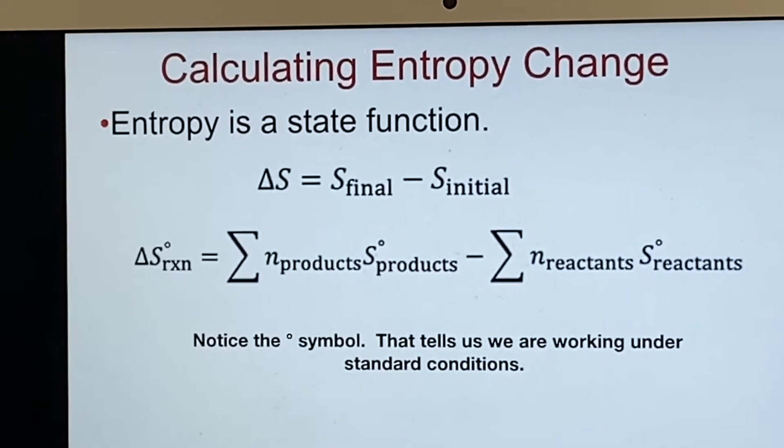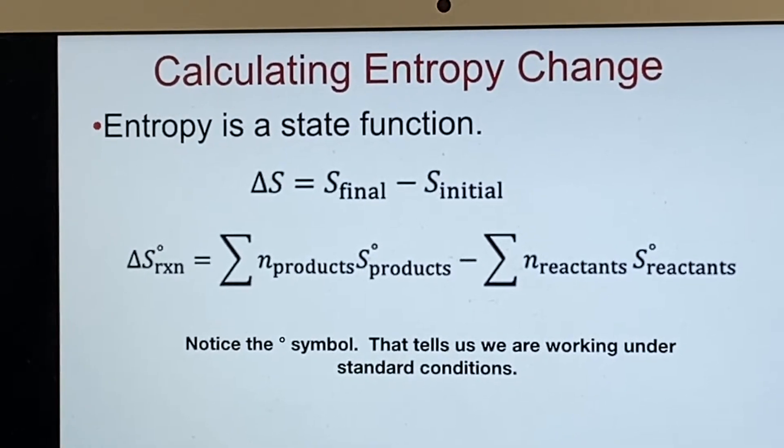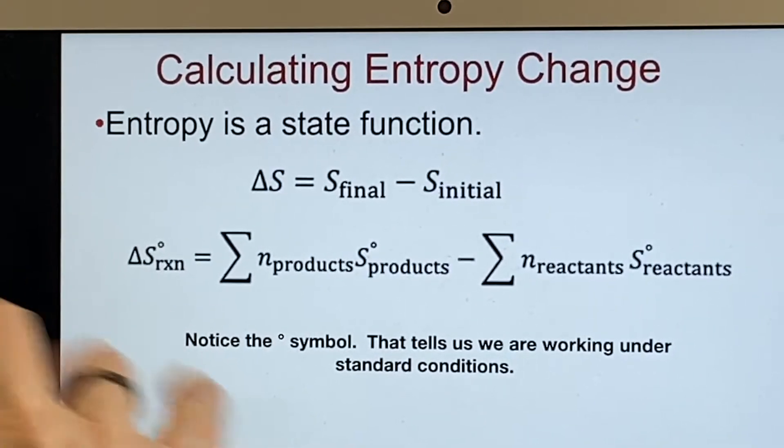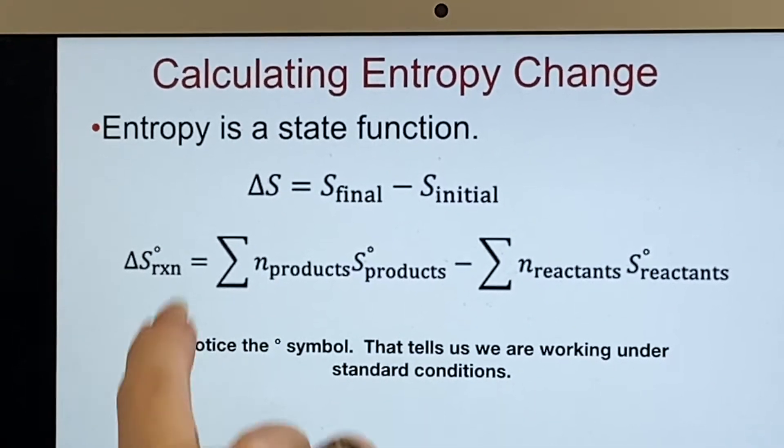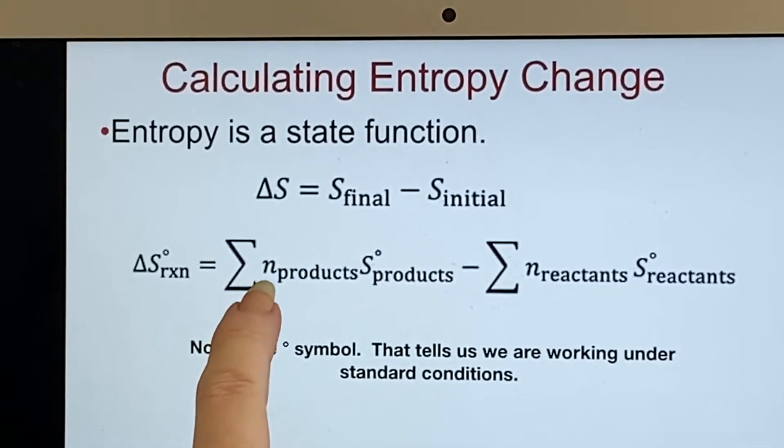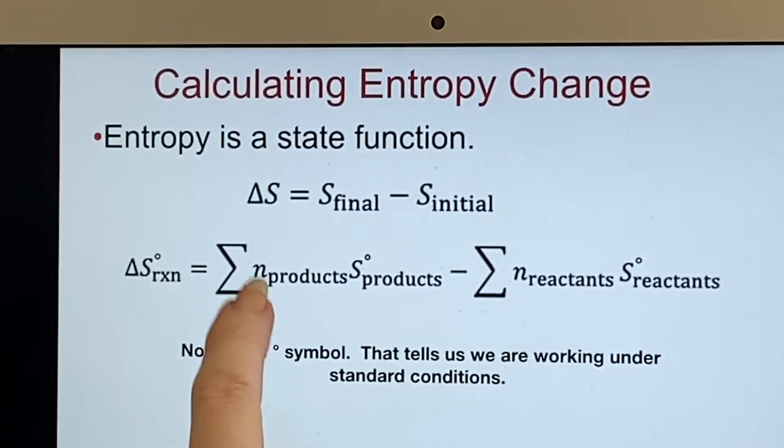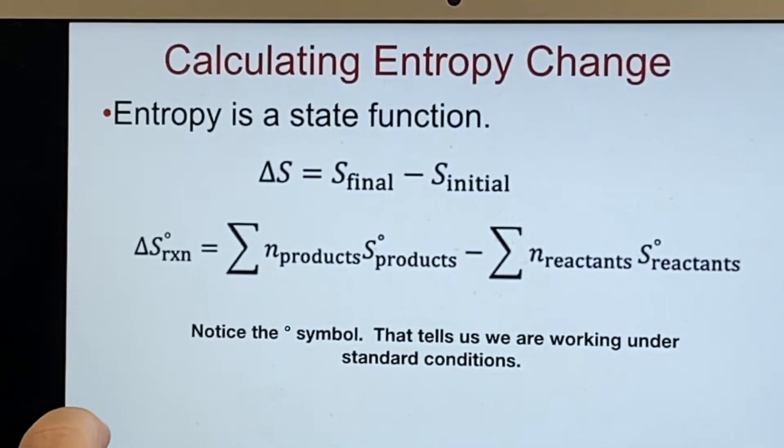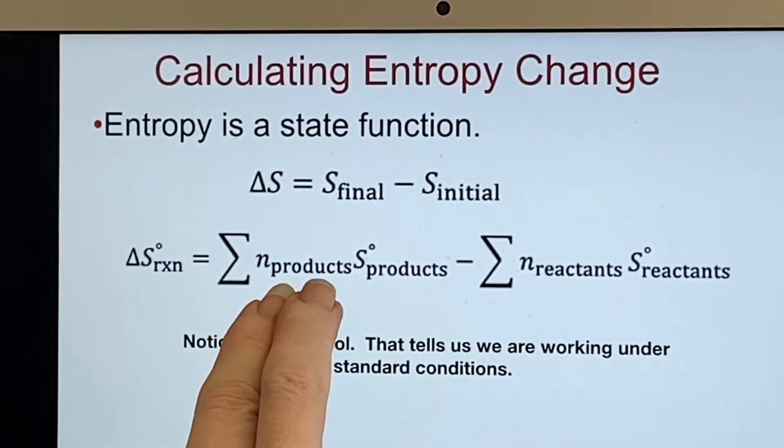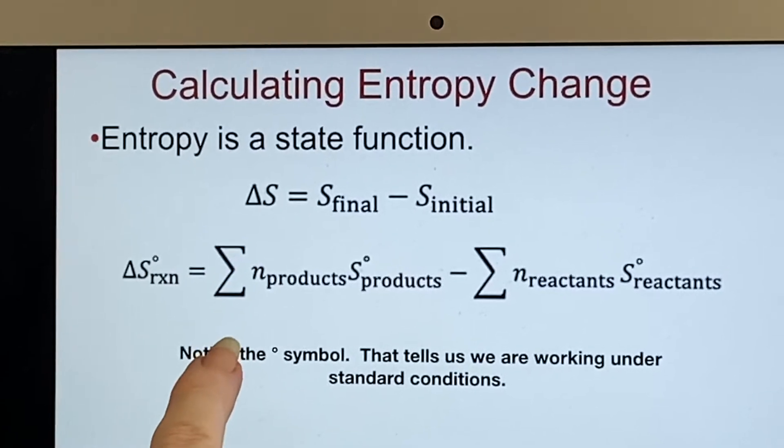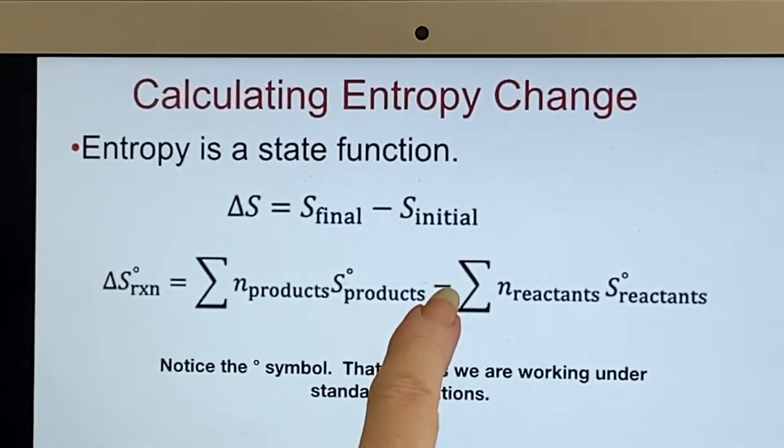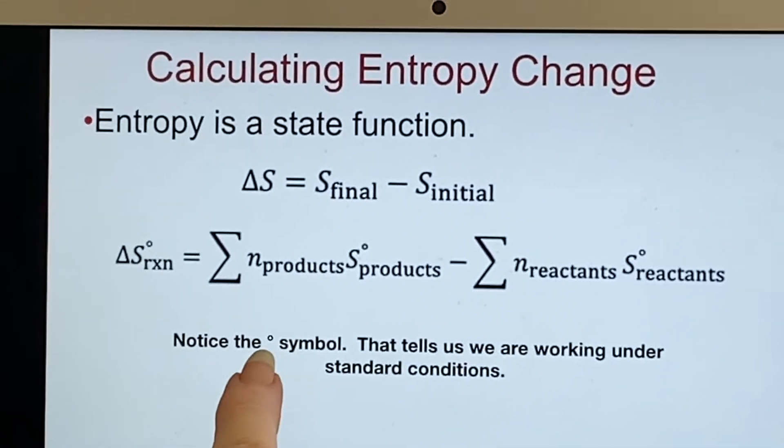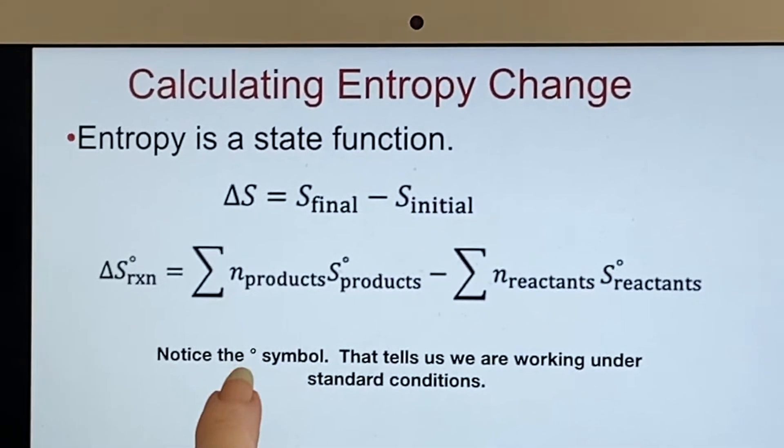That allows us to set this up the same way that you were setting up things in Chem 2 when you were working with ΔH with the enthalpy. ΔS, the entropy, does the same thing. You can just go and find out how many products do you have, number of moles of each product times its entropy value, multiply those together, sum them all up for all the products, subtract from that the same idea for all of the reactants. And these are all under standard conditions, that's why we have the degree symbol.